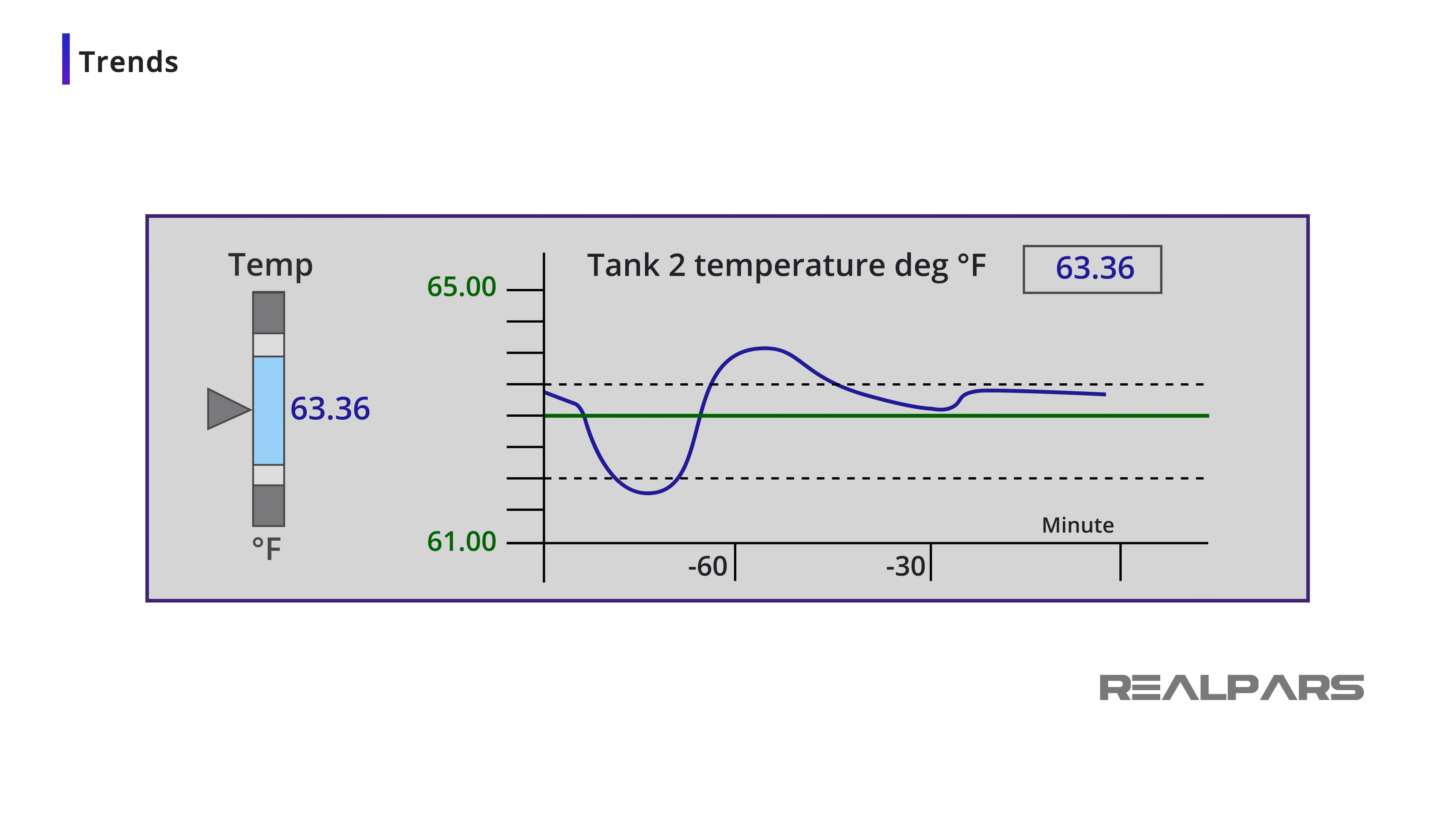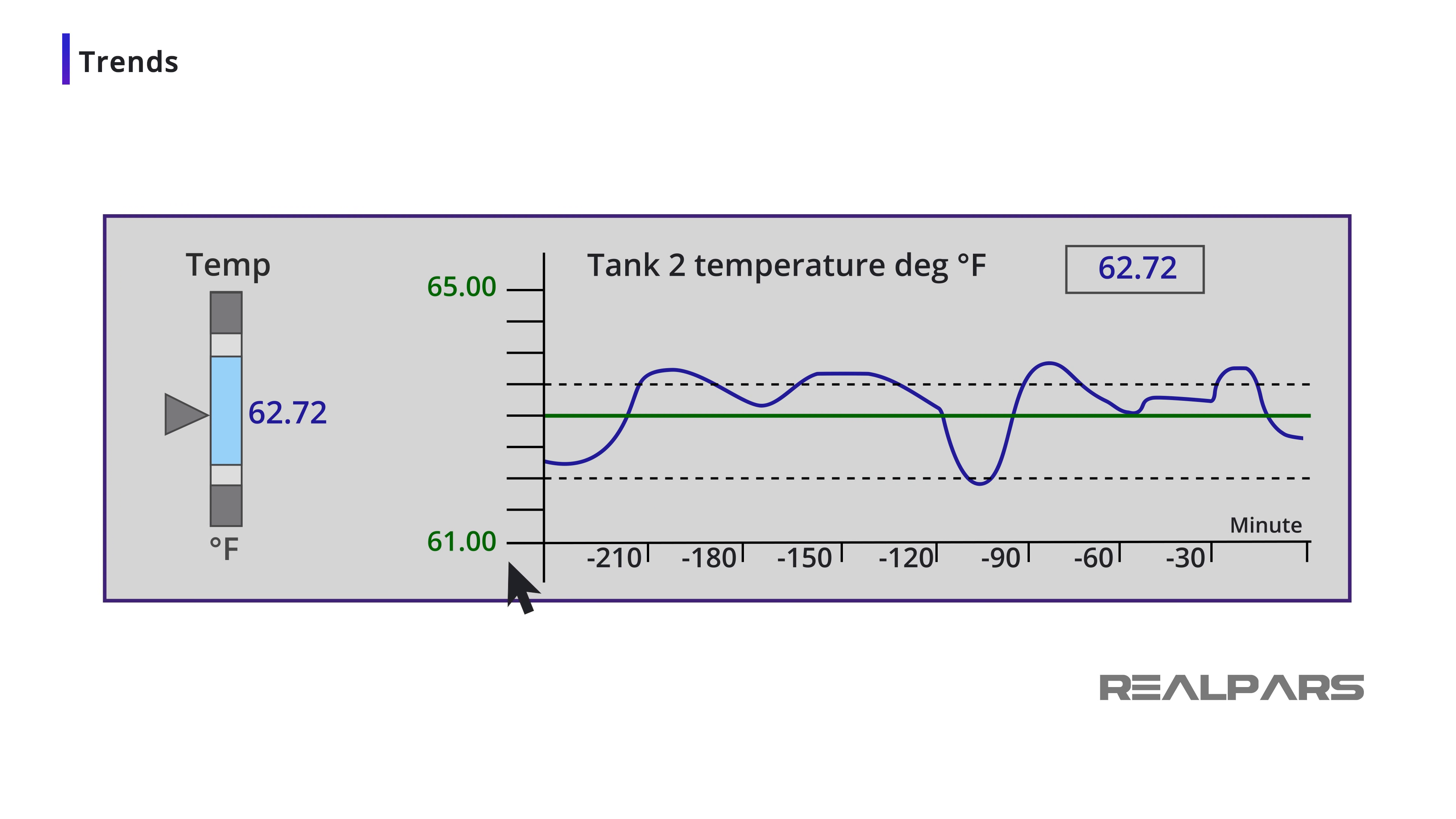For instance, when a trend graphic is called by an operator, the y-axis of the trend should be automatically ranged to a predetermined scale, which is often not the full scale of the value. Having a tight scale will make any meaningful change immediately detected by the operator. The trend screen should give the operator the capability to alter the time base and ranges without the requirement of keystrokes, making use of dragging the cursor to re-range.